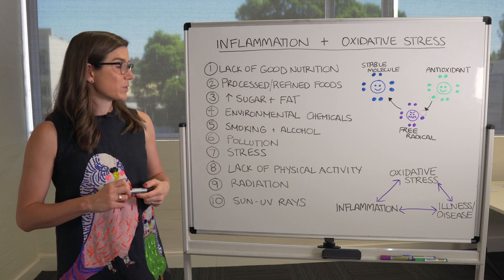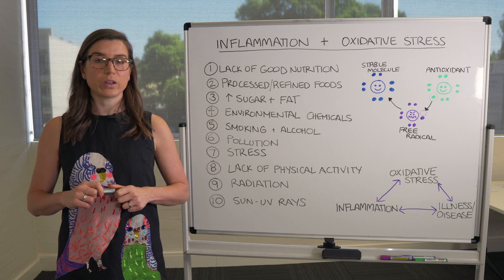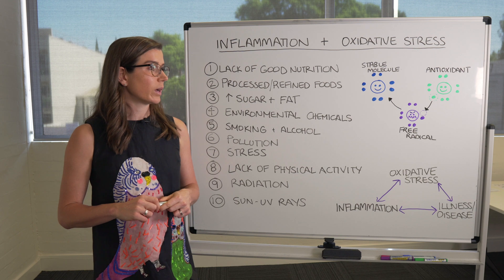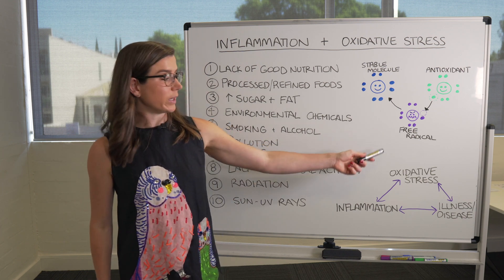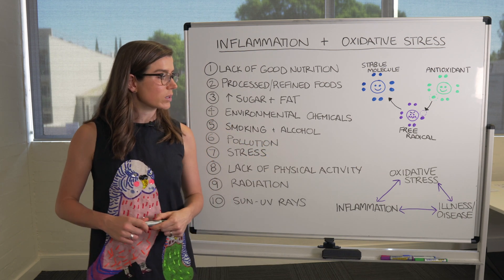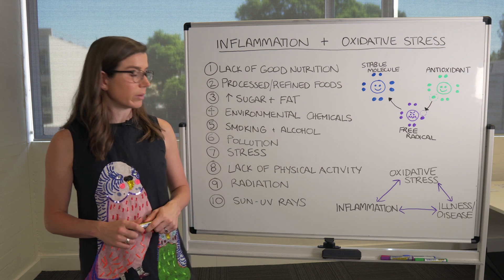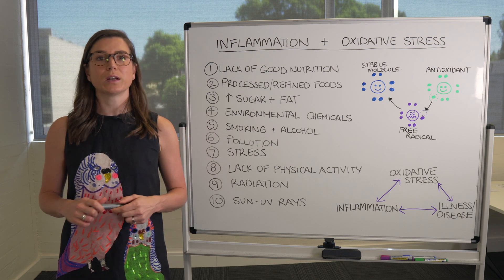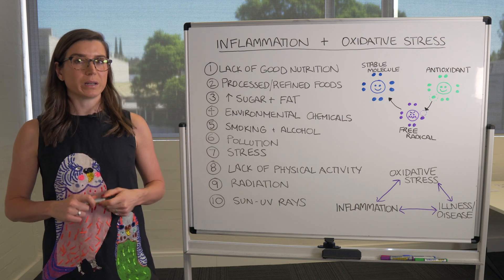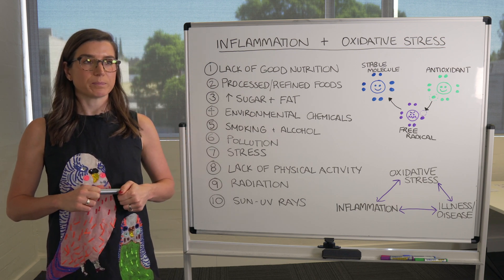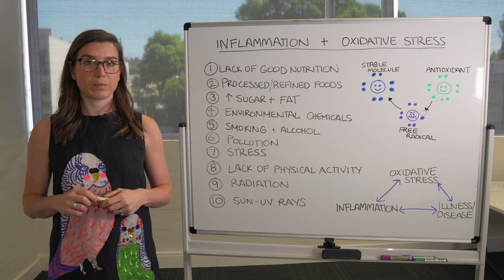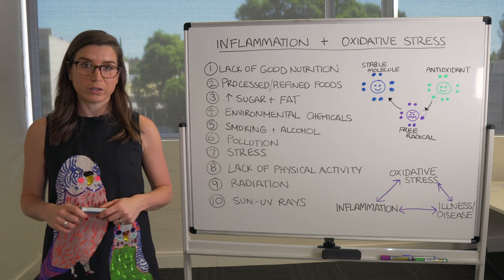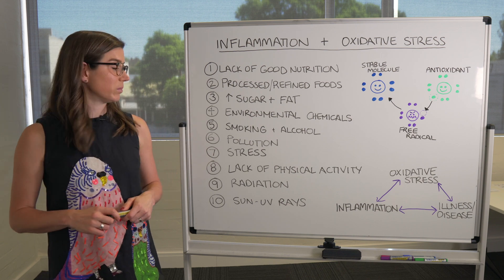Number five: smoking and alcohol. These are definitely things we've known for a long time will generate free radicals in the body and can contribute to oxidative stress and inflammation. Pollution — it's a little tricky to avoid if you are living in a population-dense city, but you can just be mindful of it and do your best.